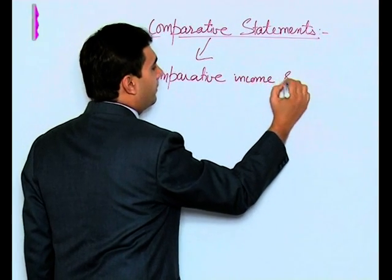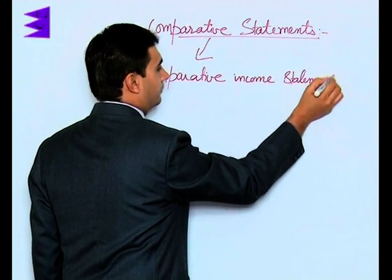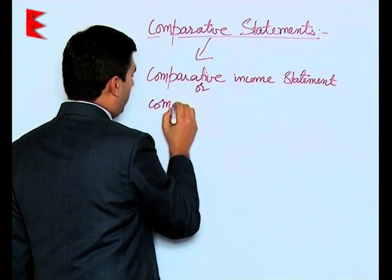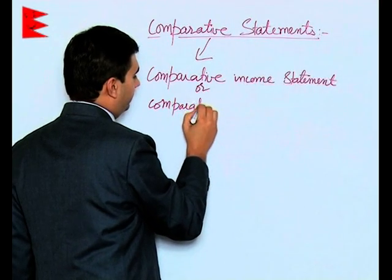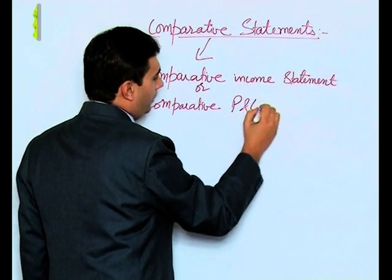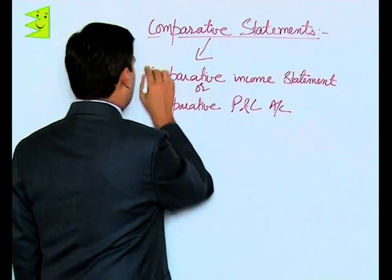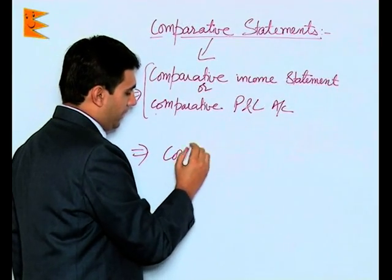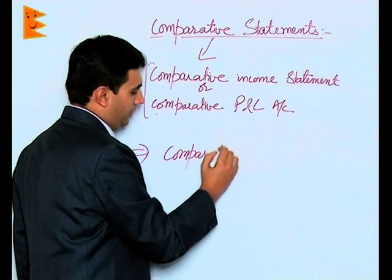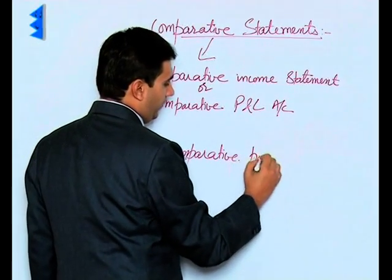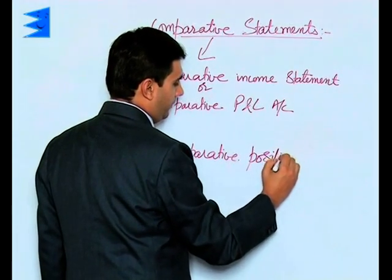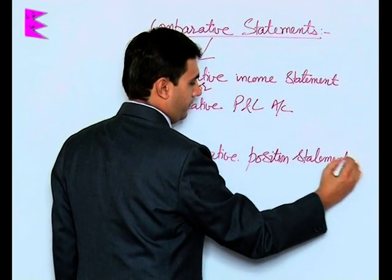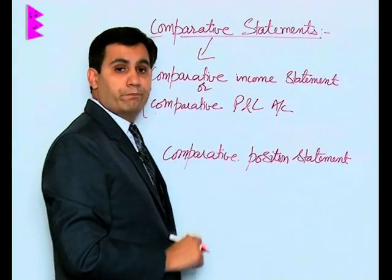The first type is the comparative income statement, which we can also write as the comparative profit and loss account — this is one and the same thing. The second part would be the comparative position statement, which is actually the comparative balance sheet.